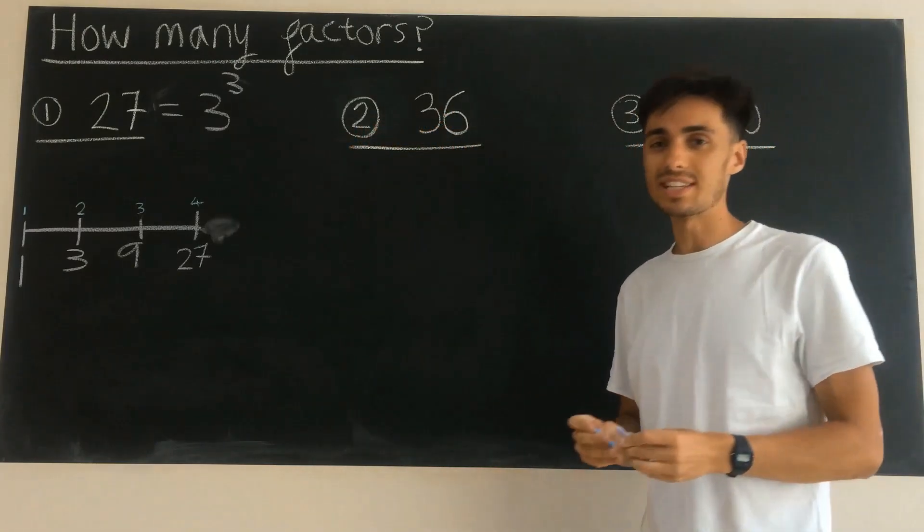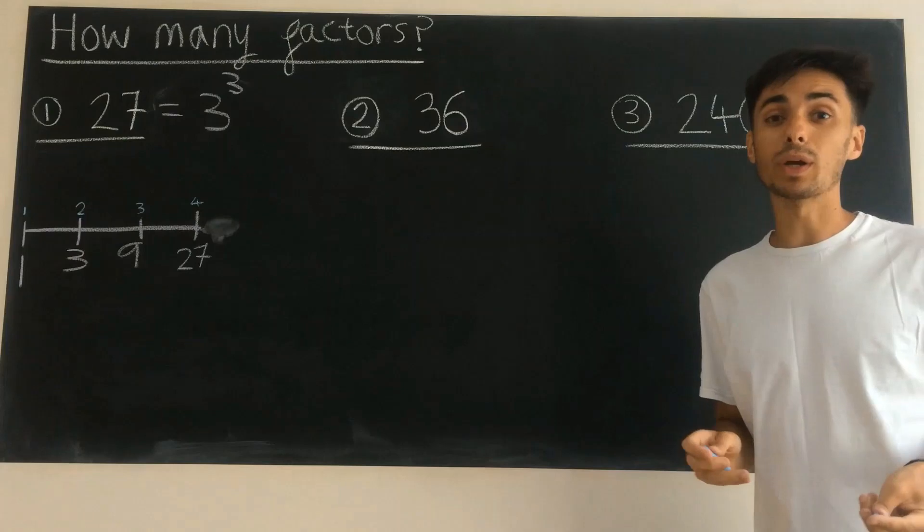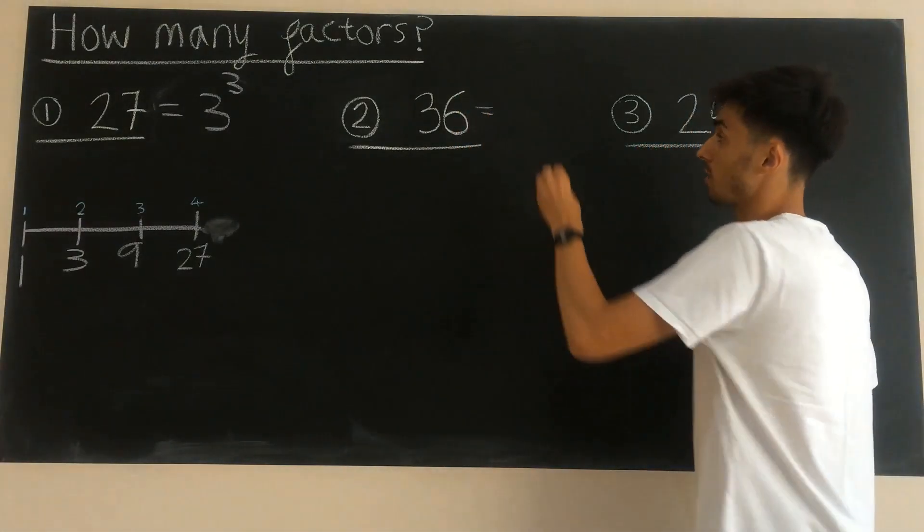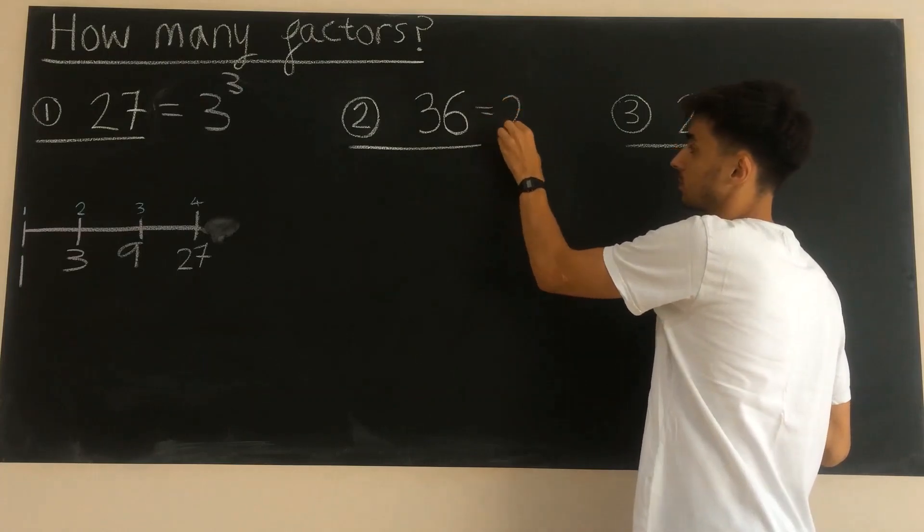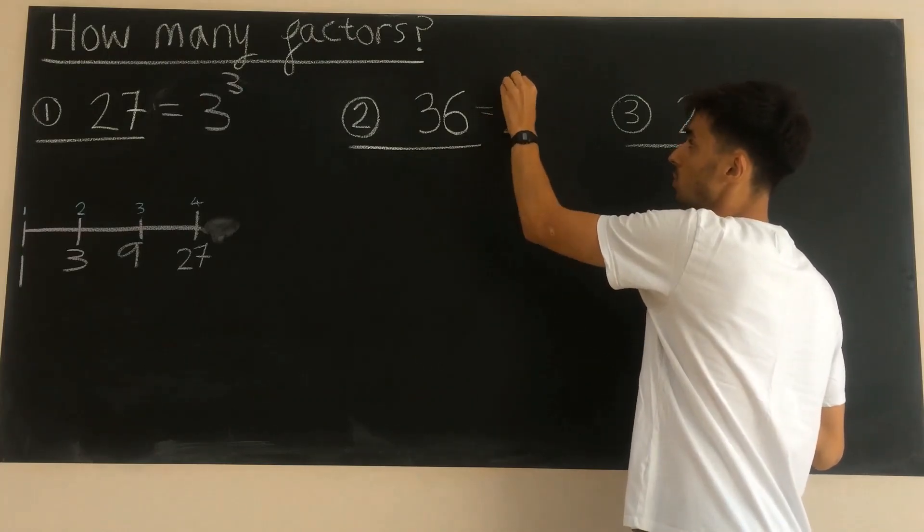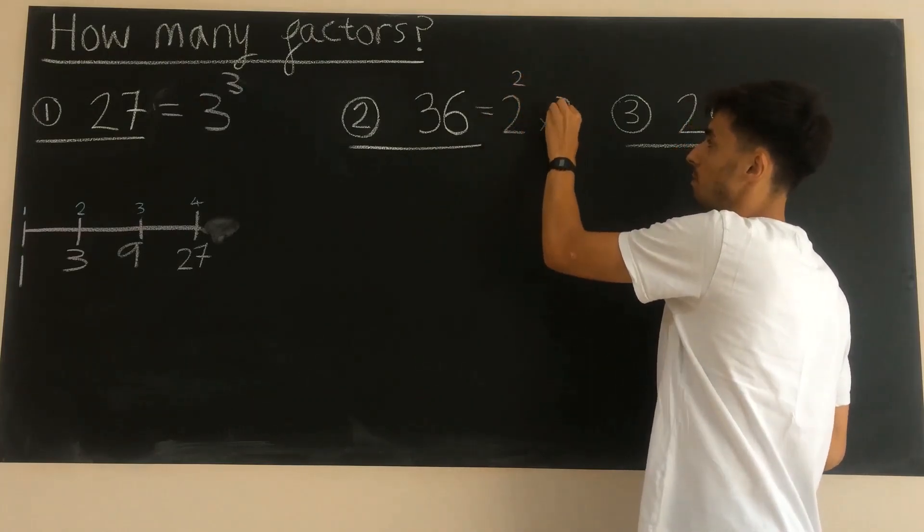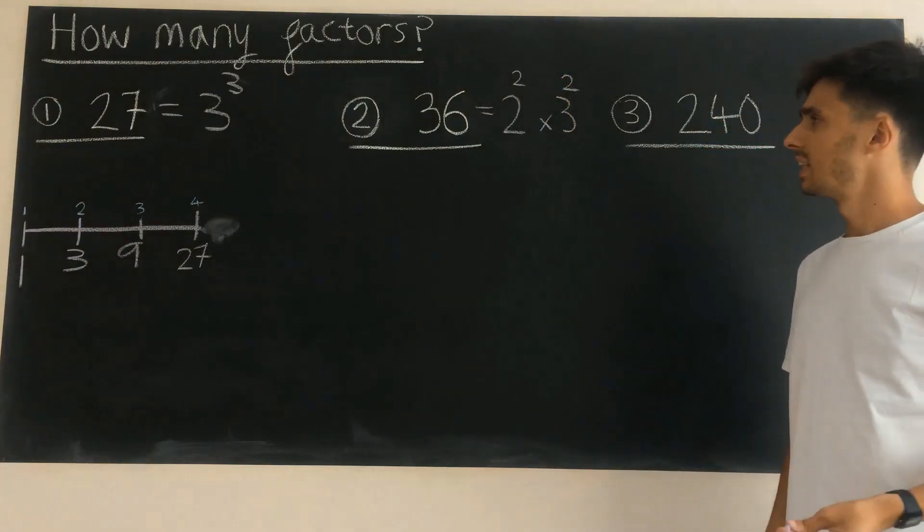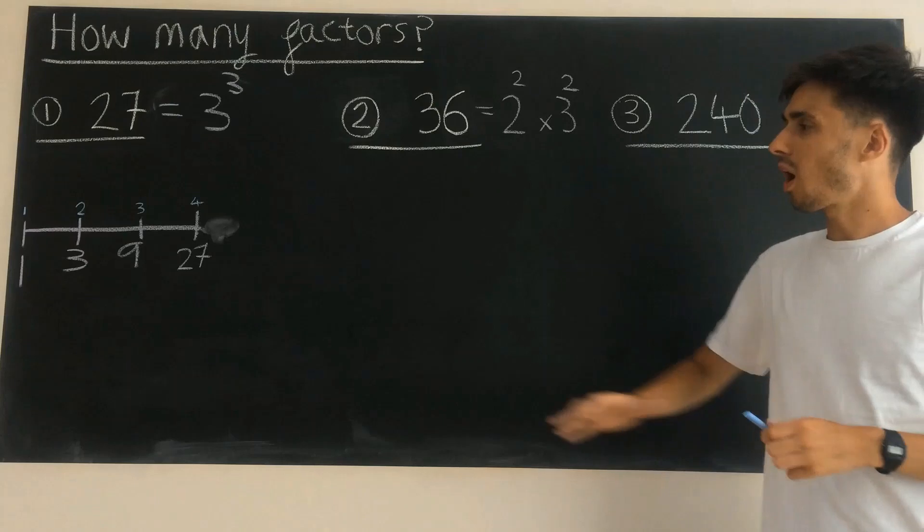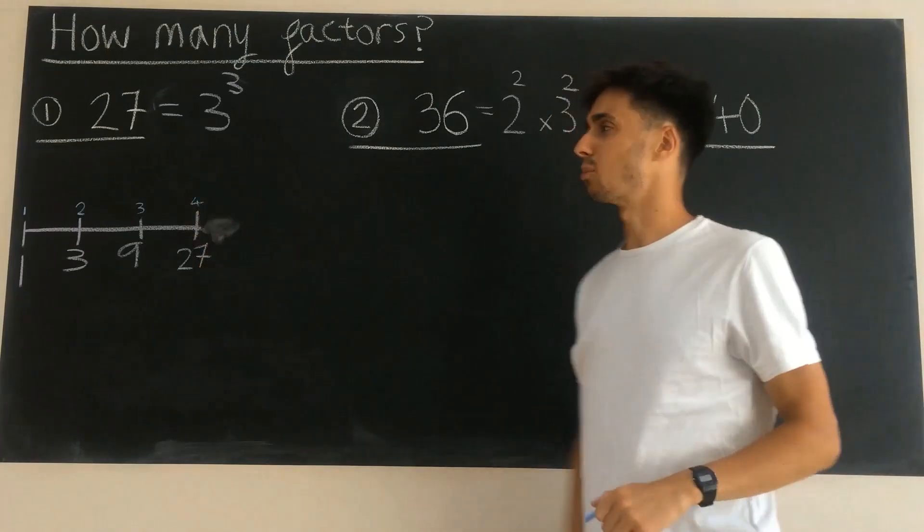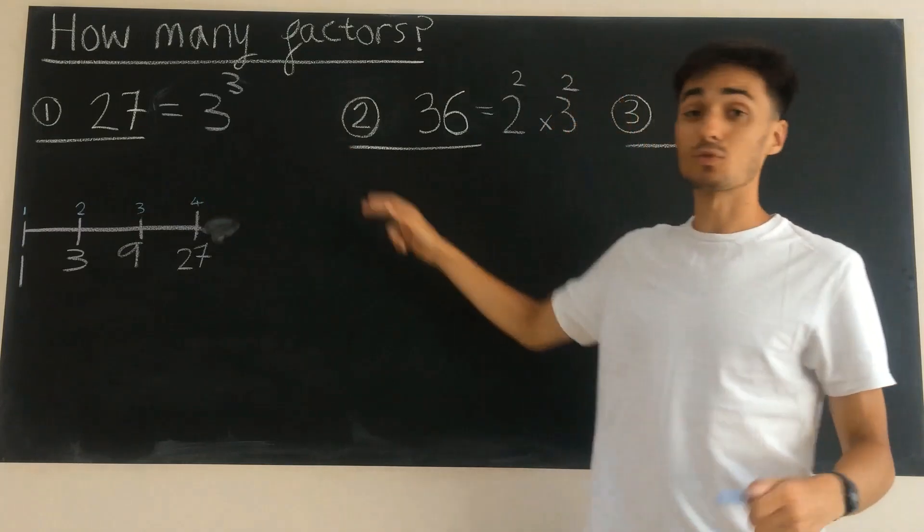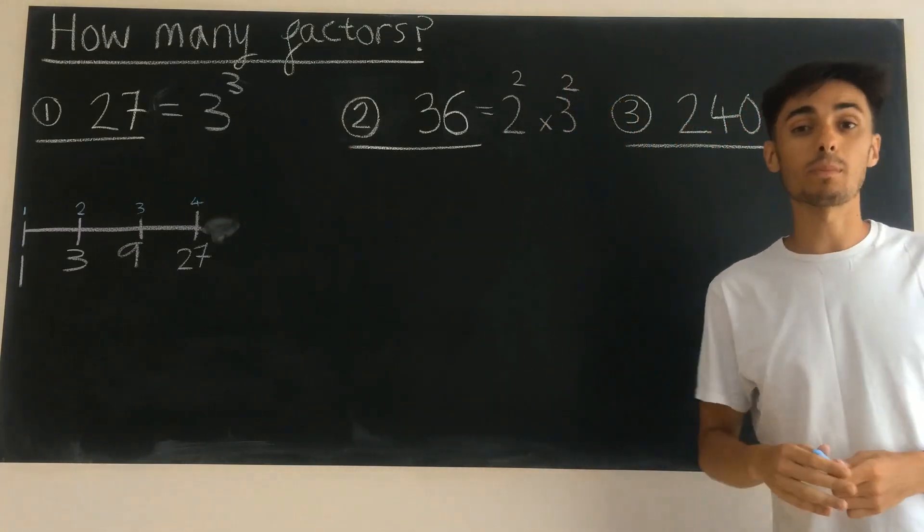But looking at a number like 36, well there's a bit more going on here. 36 when we take its prime factorization would be 2 to the power of 2 multiplied by 3 to the power of 2. And at this point, well our number line doesn't really work anymore. Because we can either choose to multiply up in powers of 2 or we could multiply up in powers of 3.